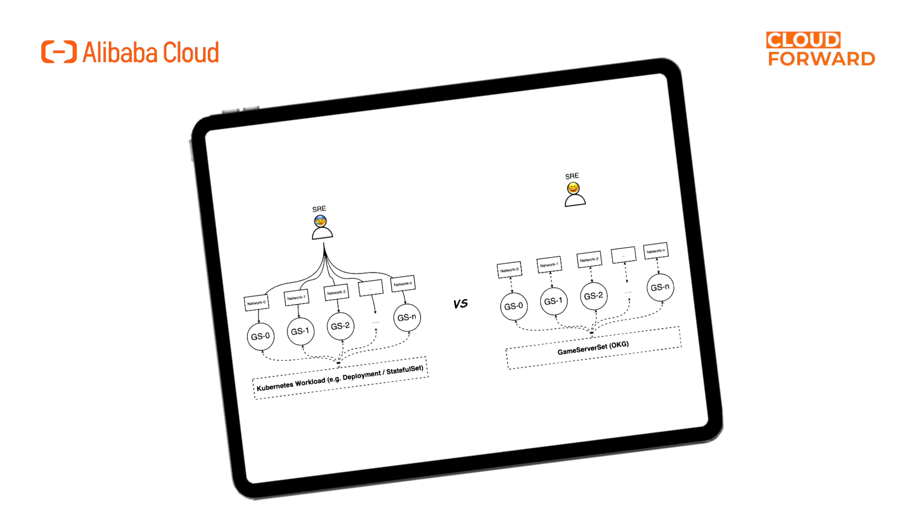Room servers can be horizontally scaled, so each room server should have its own public network access address. However, the native service load balancing model in Kubernetes cannot meet this requirement. Therefore, OKG provides various networking models to automate the management of public network addresses — EIP plus port — for room servers. Game developers do not need to worry about network configuration or infrastructure, and operators only need to provide simple parameters to efficiently deploy and automate room server network management.